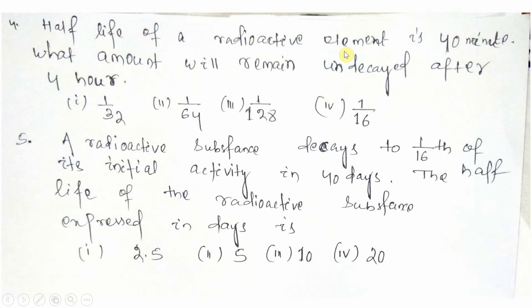Another problem: The half-life of a radioactive element is 40 minutes. What amount will remain undecayed after 4 hours? Also, a radioactive substance decays to 1/16th of its initial activity in 40 days. Calculate the half-life of the radioactive substance in days. Both problems have similar structure — try to solve them yourself.